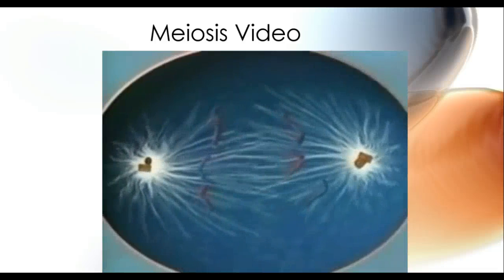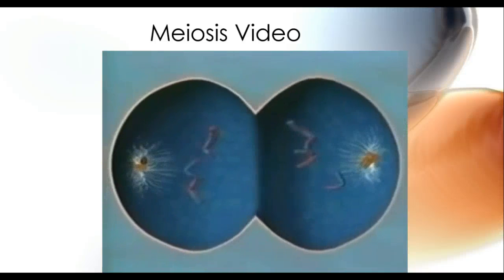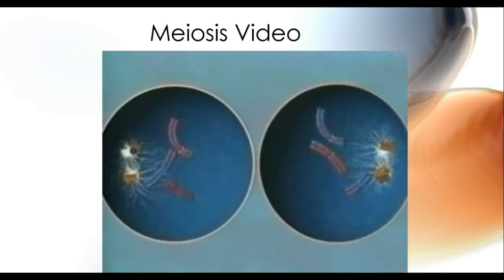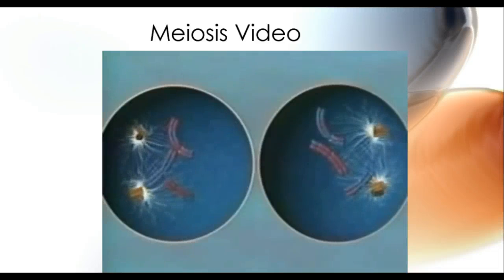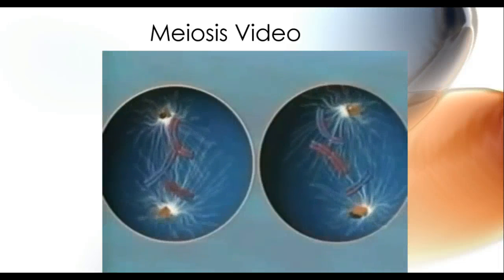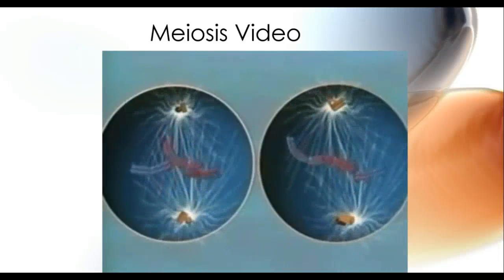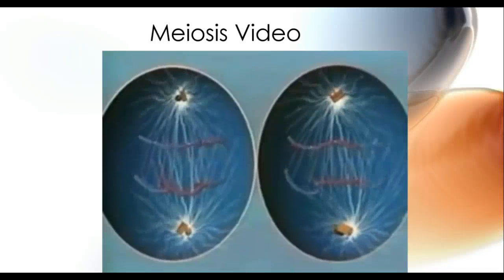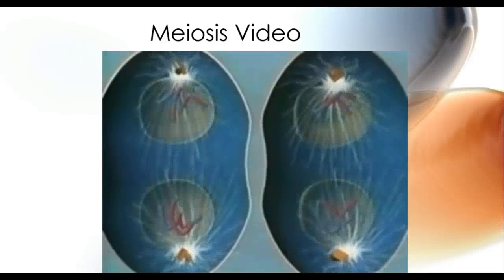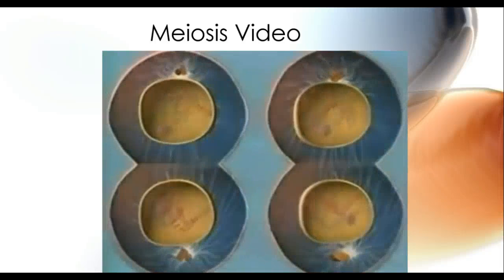Spindle fibers pull the homologues apart, leaving the sister chromatids intact. With twice the amount of genetic information the cells will need, nature must cut the genetic deck in two. The second division produces four unique sets of chromosomes. Because they carry half the genetic information, we call these haploid cells. Many of them will mature into sperm and eggs — the reproductive cells called gametes.